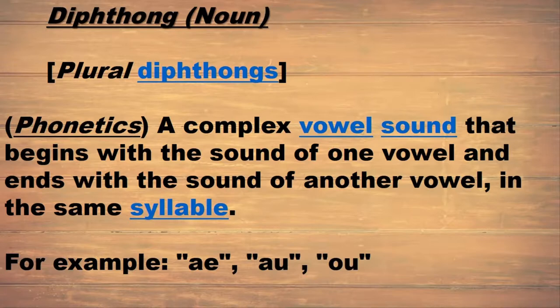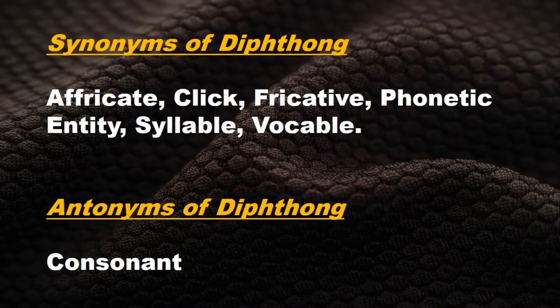...begins with the sound of one vowel and ends with the sound of another vowel in the same syllable. For example: 'ae' (that is 'a'), 'you' (that is 'oh-u'), 'oi' (that is 'oh'). Synonyms of diphthong are: affricate, click, fricative, phonetic entity, syllable, vocable.